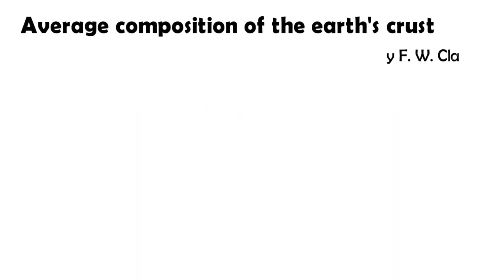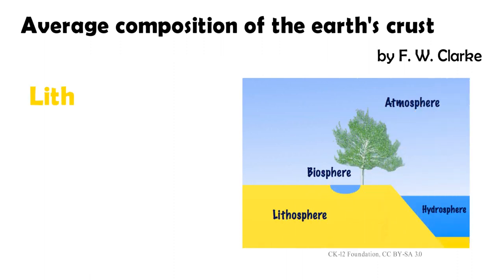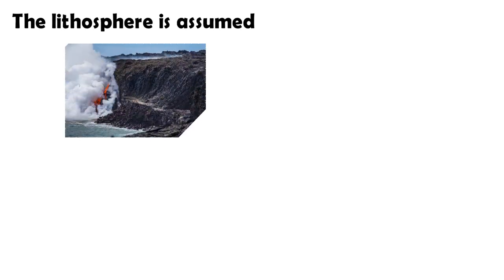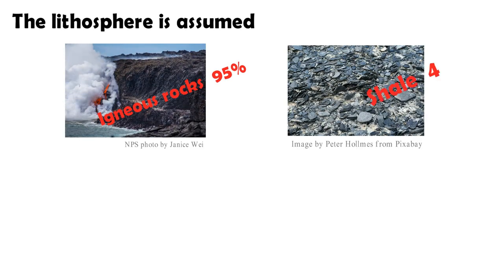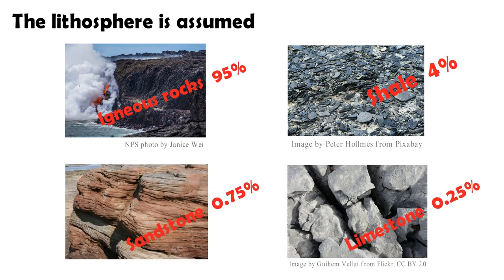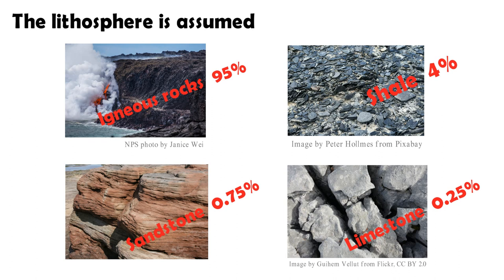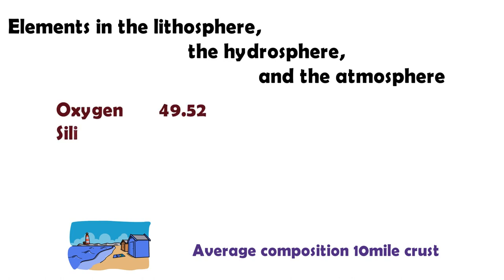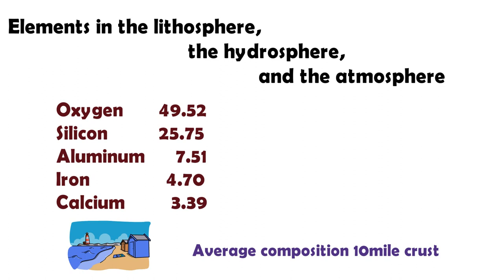These are silicate gemstones. According to the FW clock, known as part of geochemistry, the average composition of the Earth's crust consists of lithosphere 93%, hydrosphere 7%, and atmosphere 0.3%. The lithosphere is assumed to be made up of igneous rocks 95%, shale 4%, sandstone 0.75%, and limestone 0.25%. As average composition of the 10-mile crust, elements are as follows: oxygen 49%, silicon 25%, aluminum 7%, iron 4.7%, and etc.